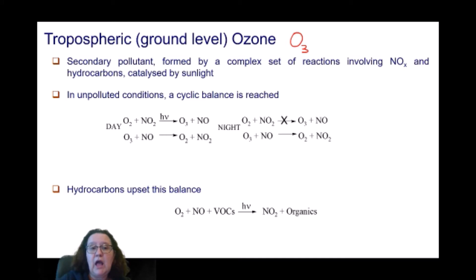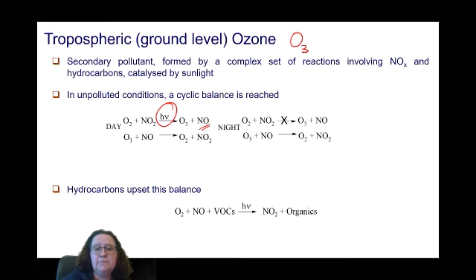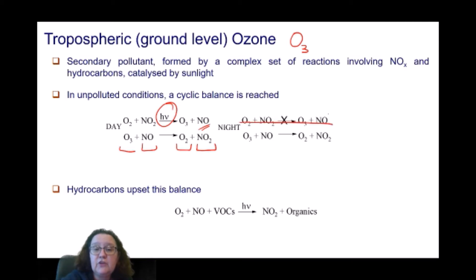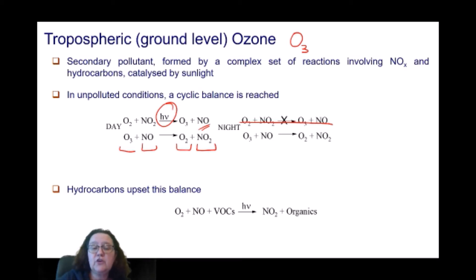During the day, oxygen and nitrogen dioxide, with the help of light, react to form ozone and release some nitrogen monoxide. There is also the opposite reaction: ozone with nitrogen monoxide releases O2 and nitrogen dioxide. The first reaction is catalysed by light; the second reaction, because ozone is so unstable, happens without the need for additional energy. At night, because the first reaction is catalysed by light, it does not happen, and only the second reaction occurs. So in unpolluted conditions, there is a cyclic balance that allows the formation and destruction of ozone to reach an equilibrium.